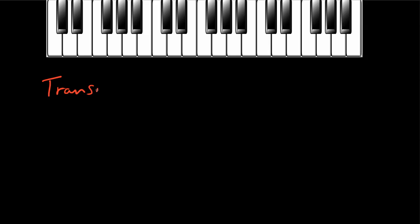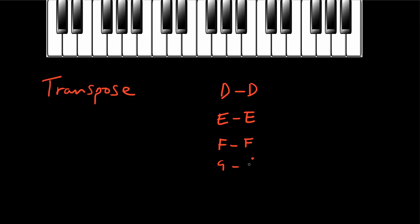Transposing is just a word that means move the mode to a different note. We've learned about the Dorian mode — the white notes between D and D — the Phrygian mode, the white notes between E and E, the Lydian mode between F and F, the Mixolydian mode G and G, the Aeolian mode A and A, and the Locrian mode B and B.